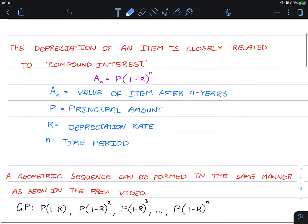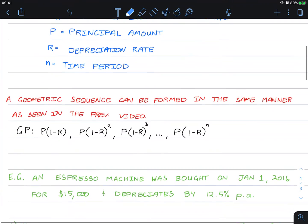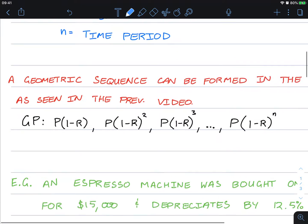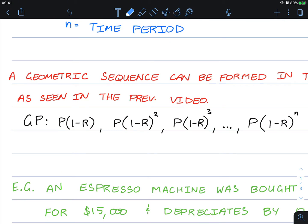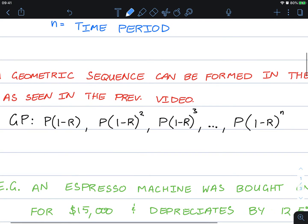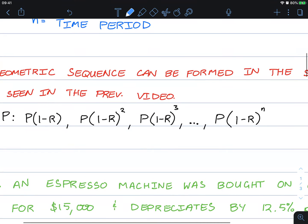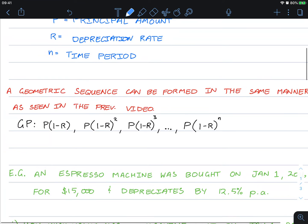A geometric sequence can be formed in the same manner as seen in the previous video. So here's the geometric progression: P(1-r), P(1-r)², P(1-r)³, and so on until we get our formula P(1-r)^n.